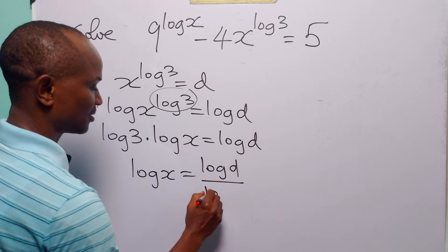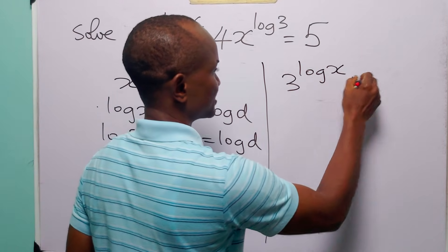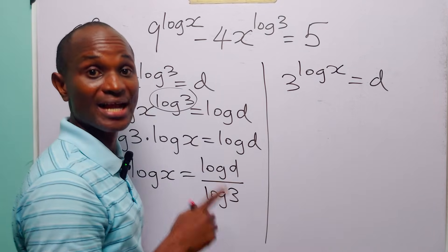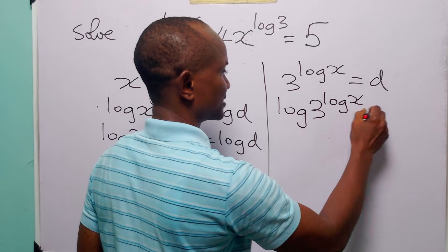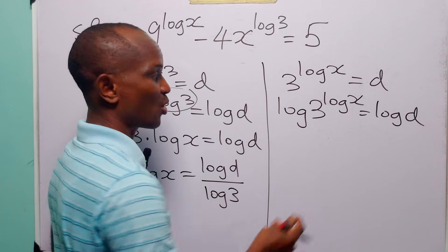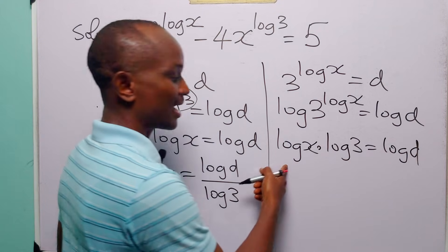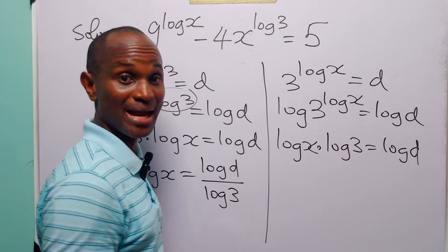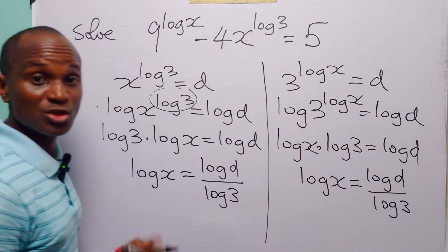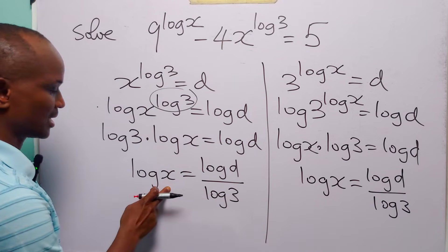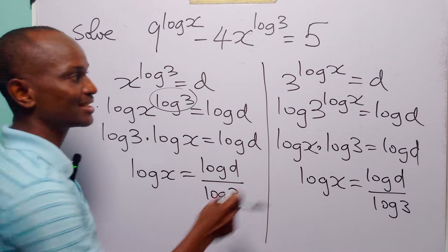We get log x equals log d over log 3. On the other hand, if you decide that 3 to the power log x equals d, taking log of both sides and applying the power rule gives log x times log 3 equals log d, so log x equals log d divided by log 3. Either way, the value of log x is the same, confirming that x to the power log 3 is exactly equal to 3 to the power log x.